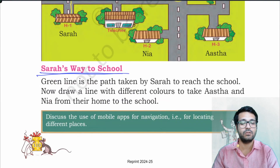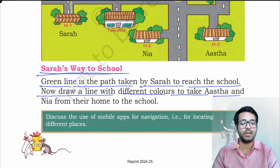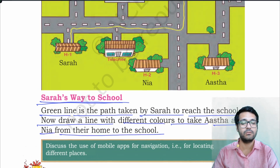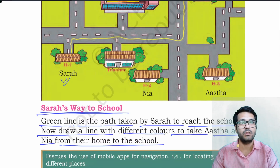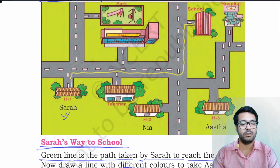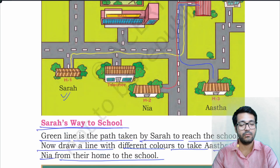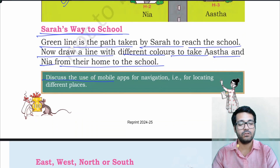Sara's Way to School. The green line is the path taken by Sara to reach the school. Now draw a line with different colors to take Astha and Nia from their home to the school. Sara's home is here and she reaches school using the green line. Similarly, you have to make Astha and Nia reach the school using different colors — for example, Nia goes like this to school and Astha goes like this. Discuss the use of mobile apps for navigation, that is for locating different places.